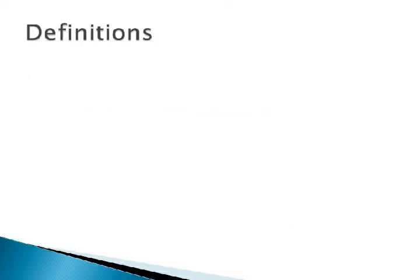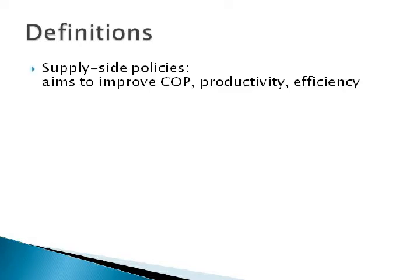Before we proceed to the policies, we will clarify certain terms we may use in this video. Supply-side policies are policies which aim to improve cost of production, productivity and efficiency by bringing about change in employment, prices of goods and services and income, which ultimately affects aggregate supply.